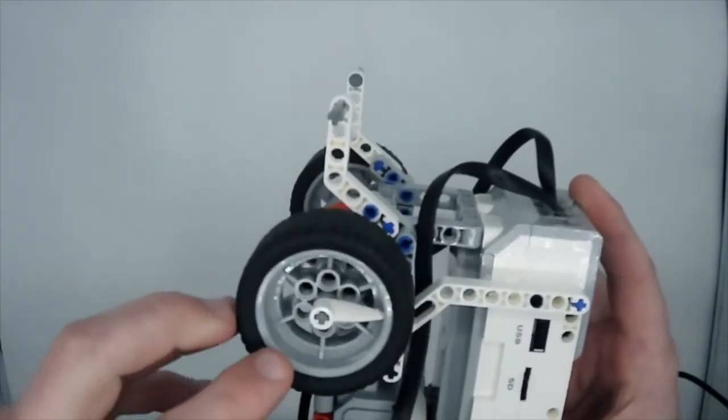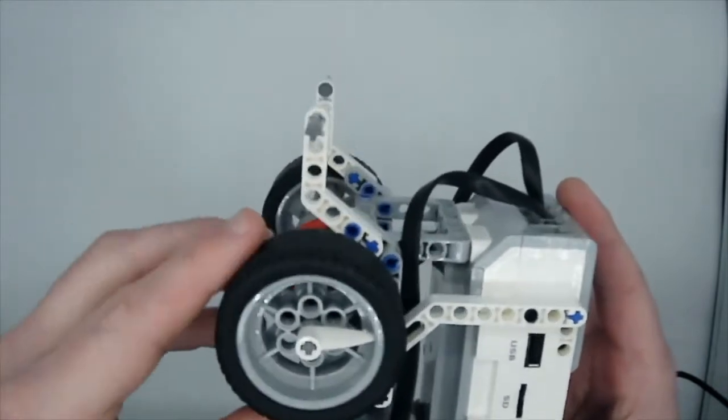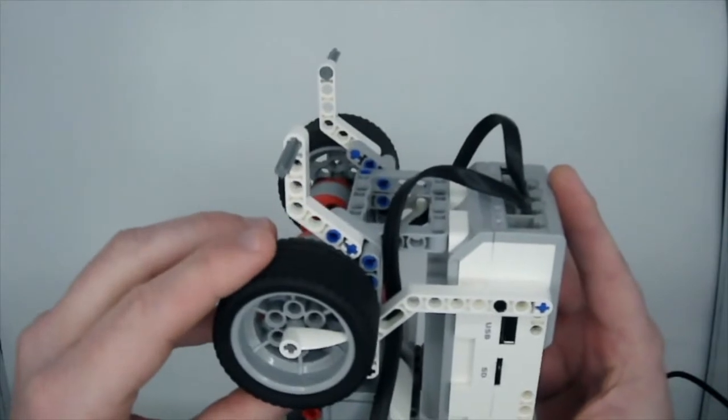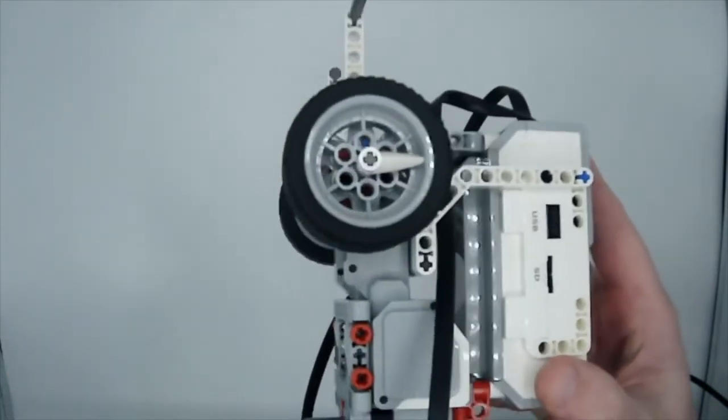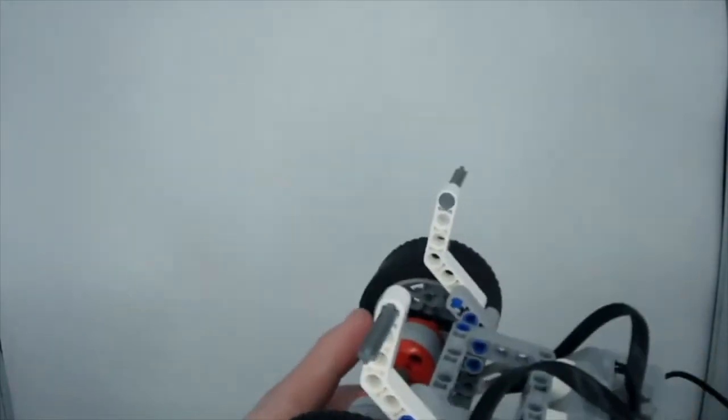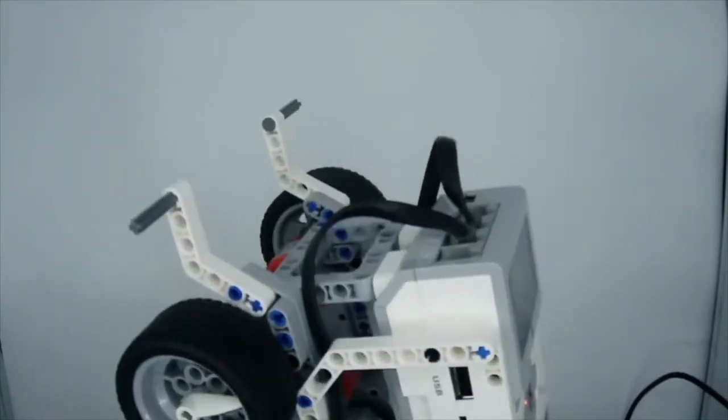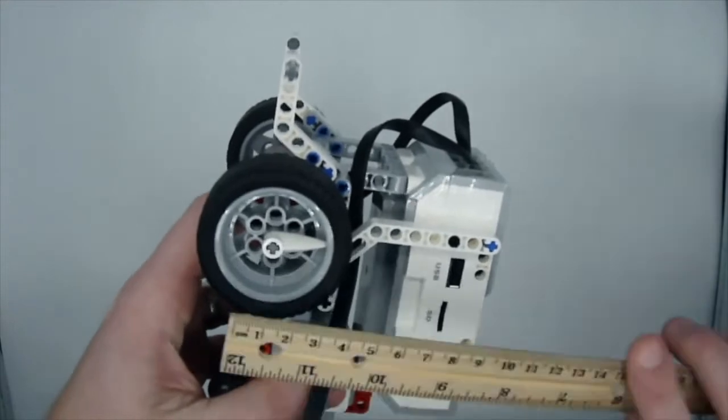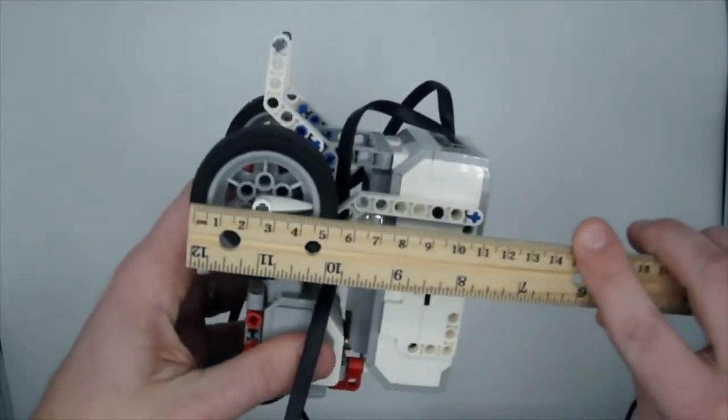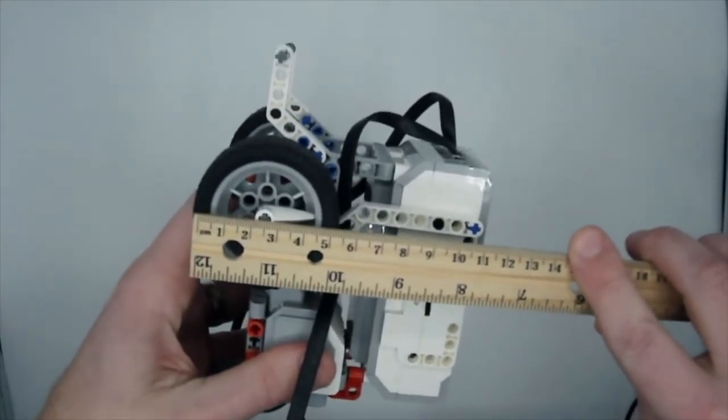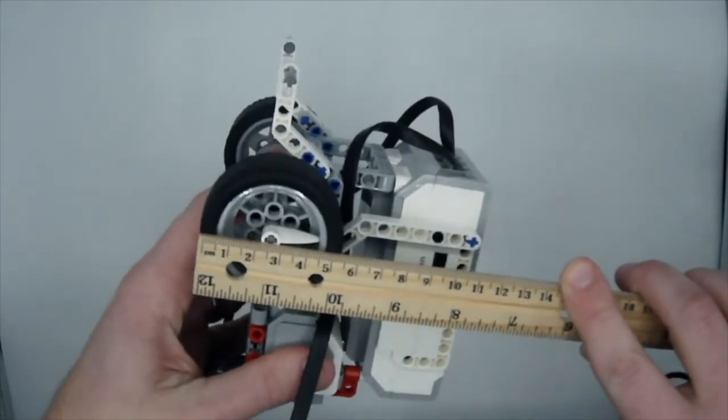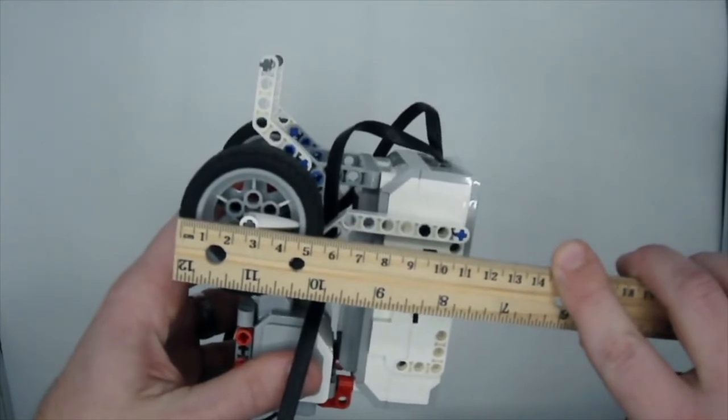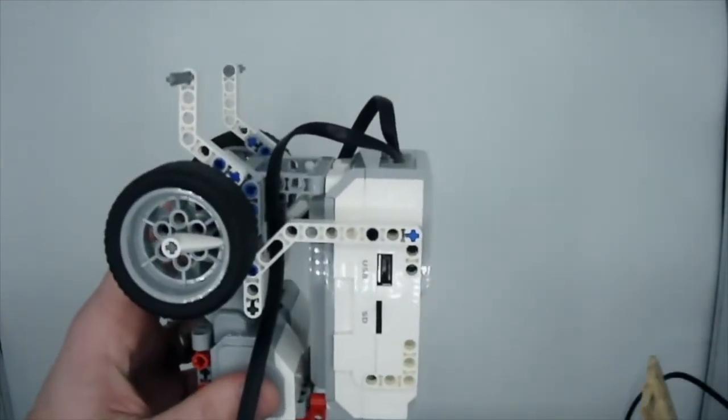The standard wheels that come in the Lego EV3 Mindstorms kit for education have the numbers 56 by 28. What this is telling you is that we have wheels that are 56 millimeters in diameter. If we set up this ruler here, you can see we're right around just about 5 and a half centimeters. I know this is not super precise, but 5.6 centimeters is what we've got.